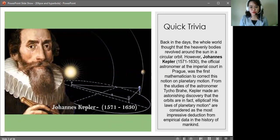From the studies of the astronomer Tycho Brahe, Kepler made an astonishing discovery that the orbits are in fact elliptical. His laws of planetary motion are considered as the most impressive deduction from empirical data in the history of mankind.